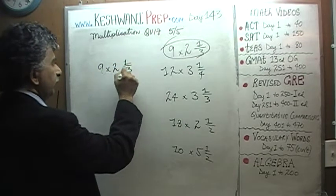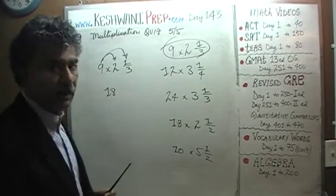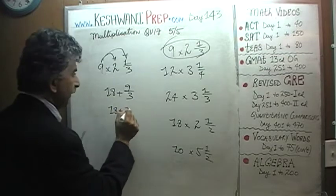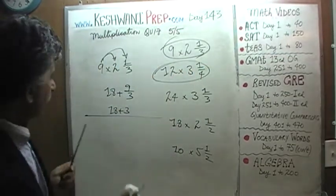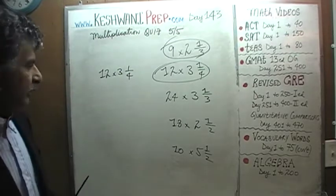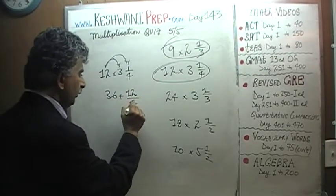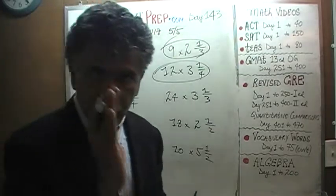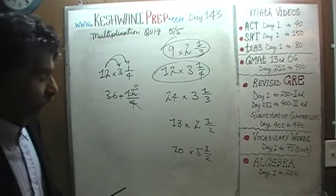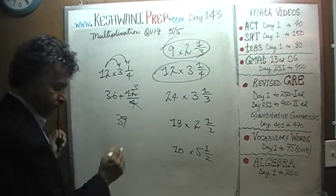Nine times two and one third: that's simply nine times two, which is eighteen, and nine times one third is nine thirds. Nine thirds is three, so it's eighteen plus three, which is twenty-one. Twelve times three and a quarter: twelve times three is thirty-six, and twelve times a quarter gives us twelve quarters. Twelve quarters is three — like three dollars — so it's thirty-six plus three, which is thirty-nine.